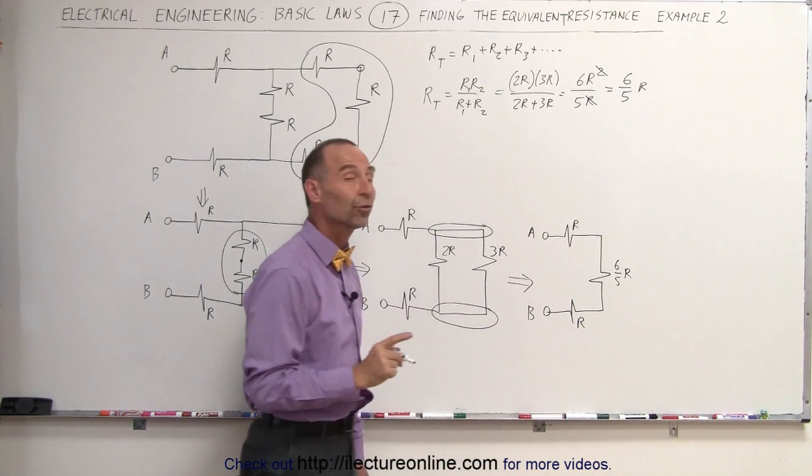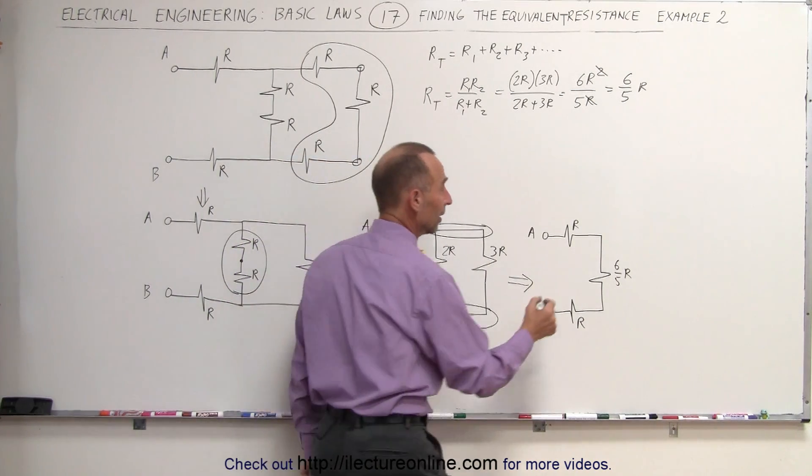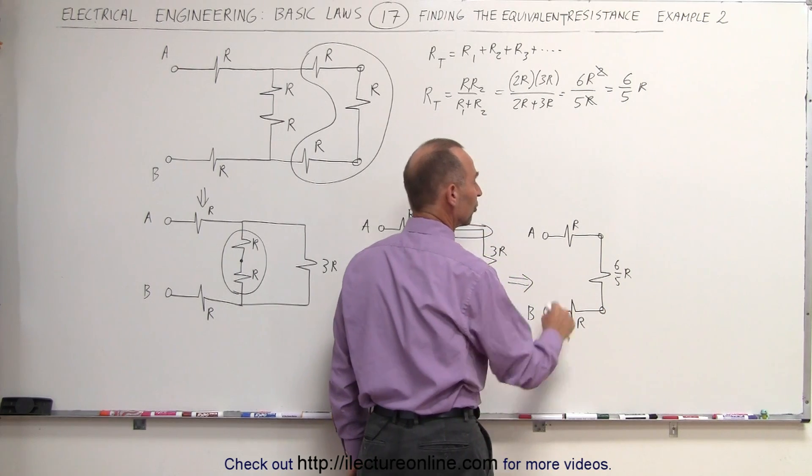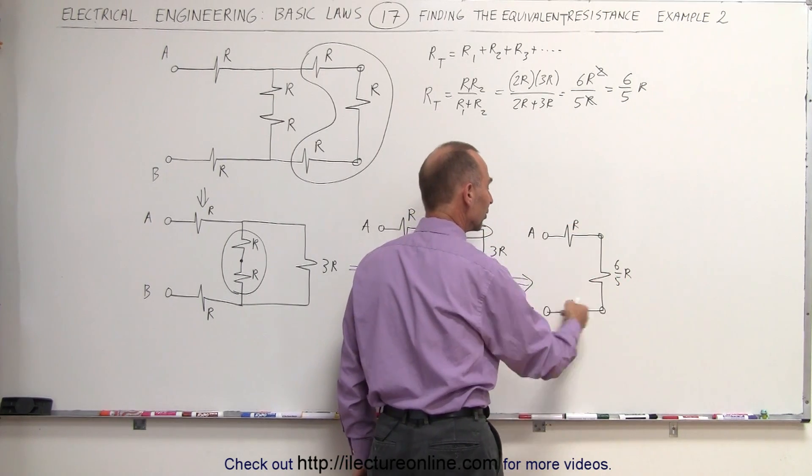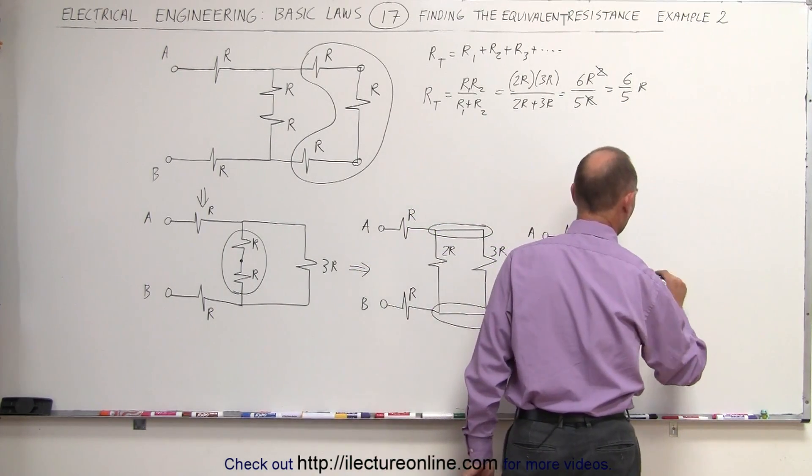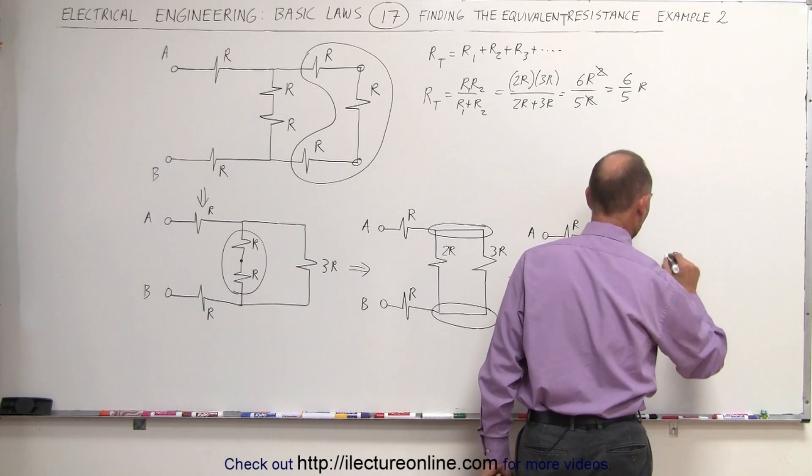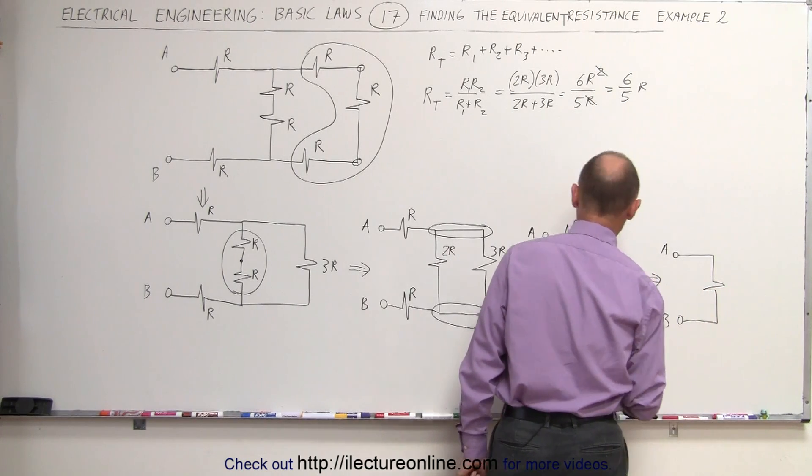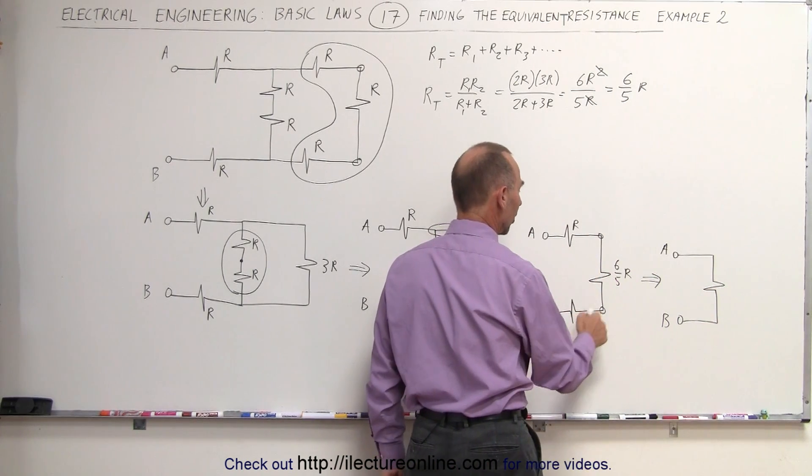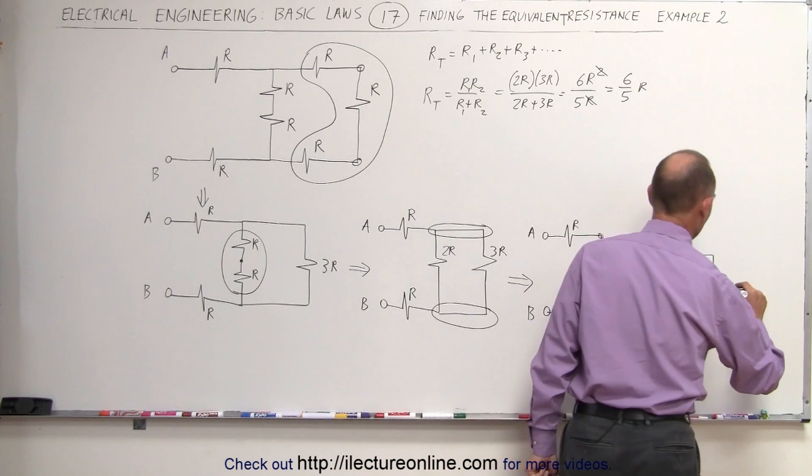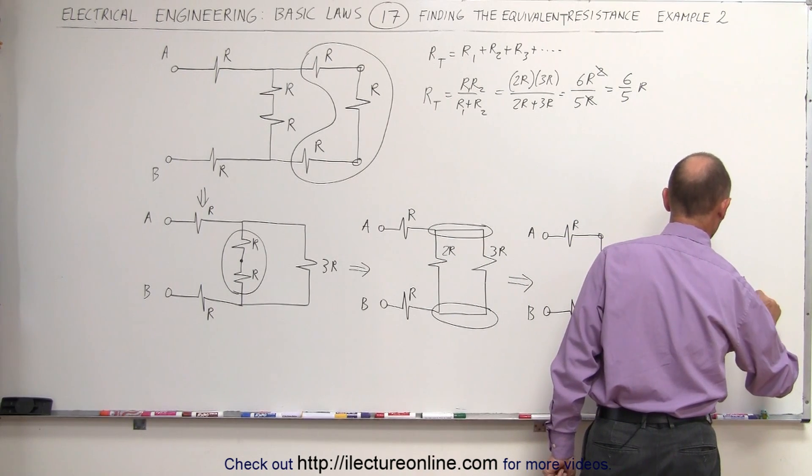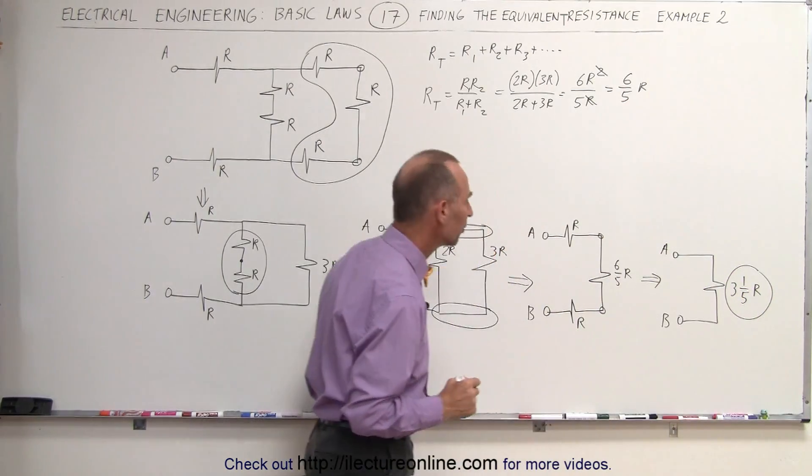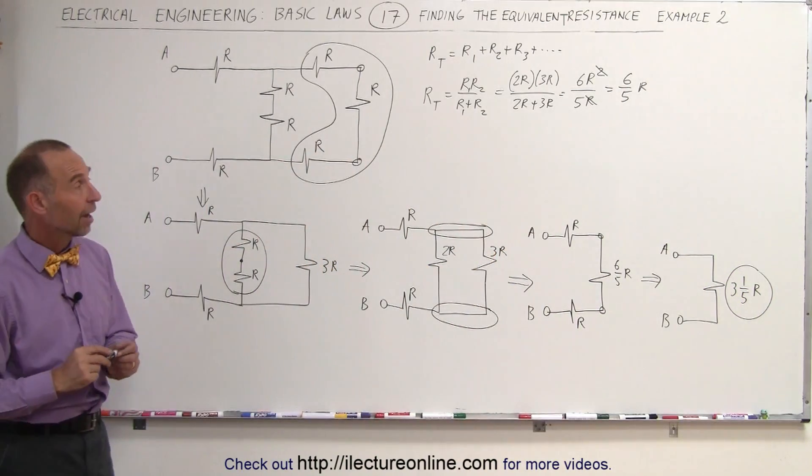And now we can see that those three resistors are in series. Here they share a common node exclusively. Here those two share a common node exclusively. We can see that this is a series circuit. This can now be drawn as a circuit with a single equivalent resistor, A and B, single resistor. Simply adding these up together, R plus R plus 6 fifths R, that's equal to 3 and 1 fifths R, is the total or equivalent resistance of those three resistors. And that's how that's done.